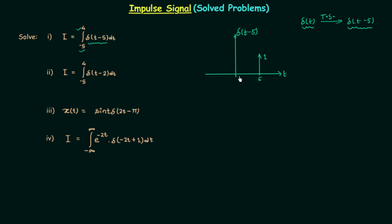The next step is to locate the lower and upper limits of integration. In this range, from -5 to 4, δ(t-5) is equal to 0. So when you perform the integration you are going to get 0. This is how you solve the first problem.